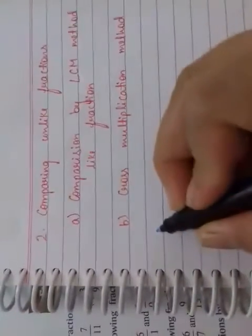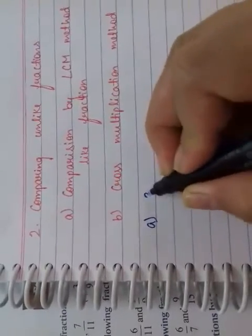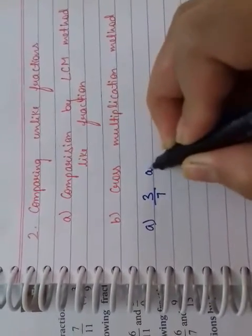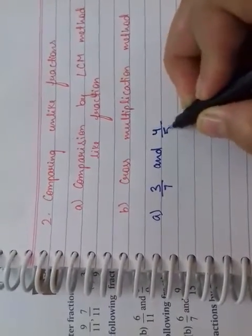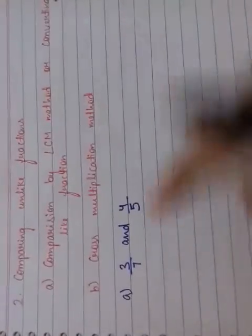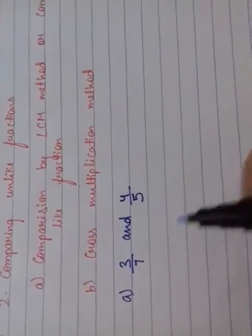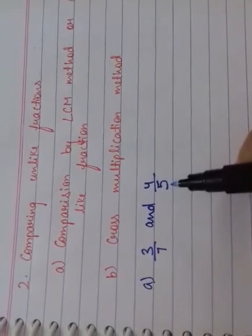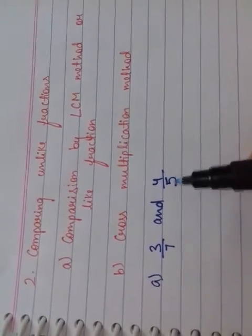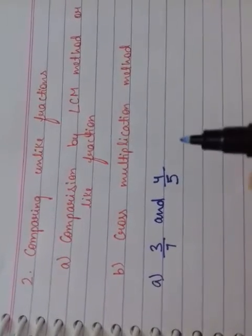So what are the fractions? That is 3 by 7 and 4 by 5. As you can see clearly, they both are unlike fractions. Why are they both unlike fractions? Because they both carry different denominators. That's why we call this unlike fractions.